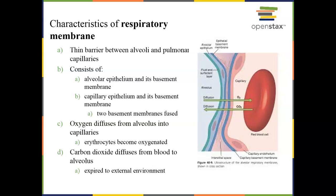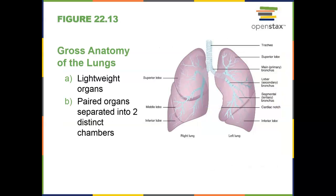Oxygen moves from higher to lower concentrations, down a pressure gradient — we'll talk about that more in a bit. It moves into our blood, which has lower oxygen levels. Carbon dioxide moves out of our blood and into our lungs, which has lower carbon dioxide levels.